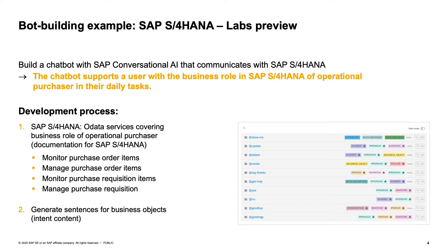As a next step, we would want to generate sentences for business objects — this is the intent content. With a horizontal approach, we want to cover all of these OData services: monitoring and manage. For monitoring, it's basically a 'show me' skill of a chatbot — show me any business object, in our case the purchase order or purchase requisition.